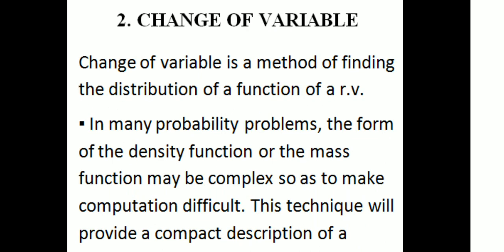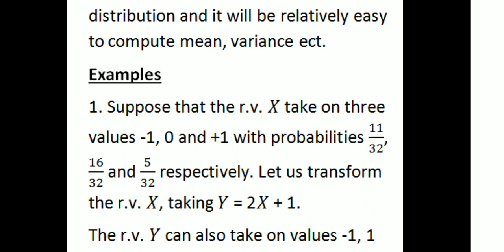Let's calculate the mean and variance. Let's take an example. Suppose that the random variable X takes on three values: minus 1, 0, and plus 1 with probabilities 11/32, 16/32, and 5/32 respectively. So three values are given: minus 1, 0, and 1, with corresponding probabilities assigned.